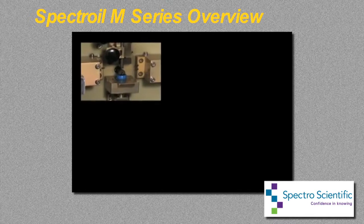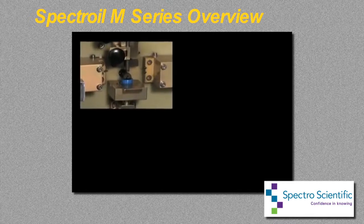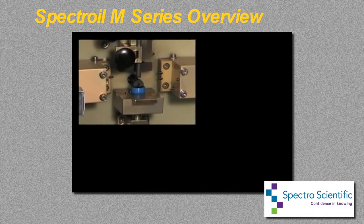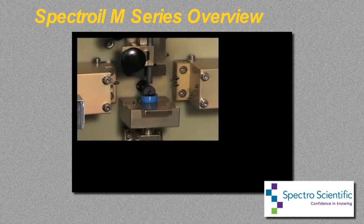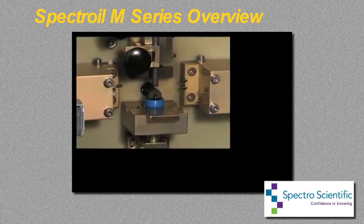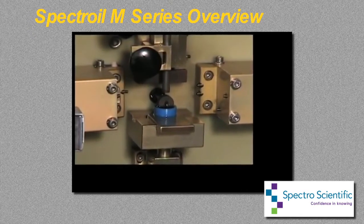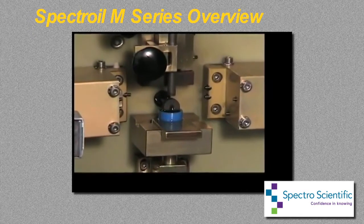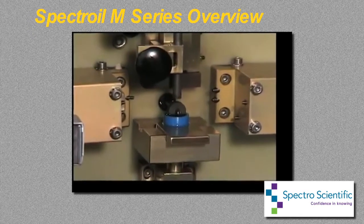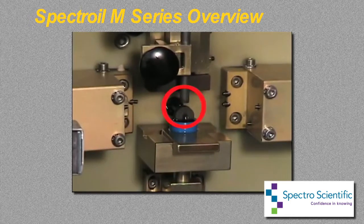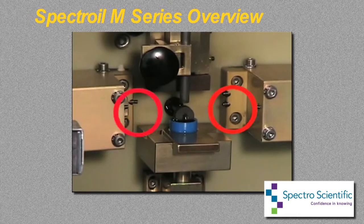The excitation source introduces energy to the sample. The excitation of the sample occurs in the sample stand, the chamber in which the oil sample is placed for analysis. Here we can observe a rod and disk carbon electrode, sample stand, and monitoring sensors.